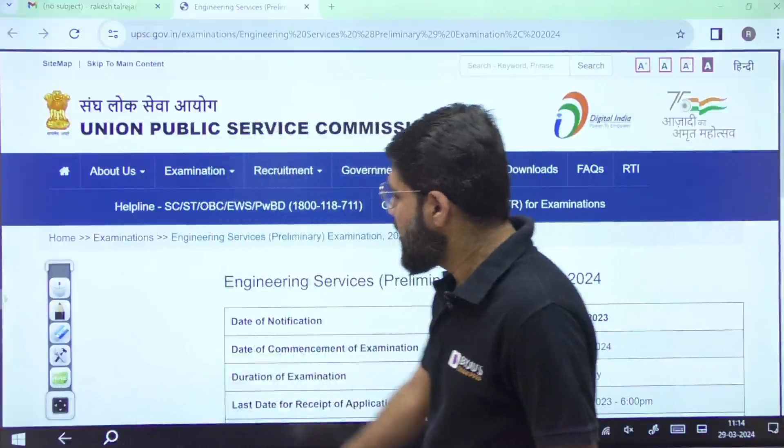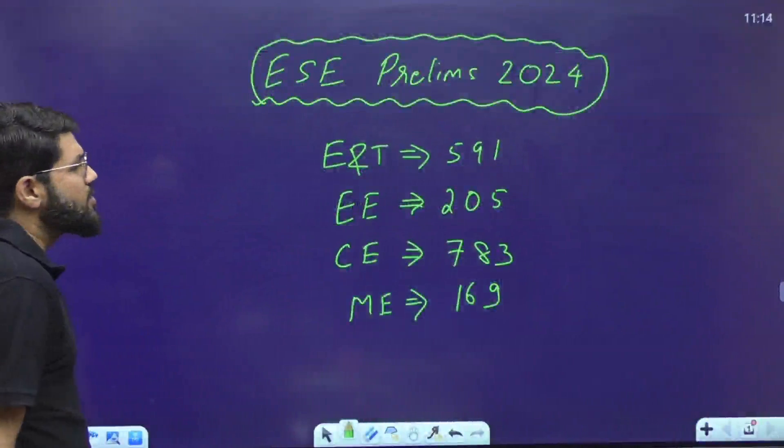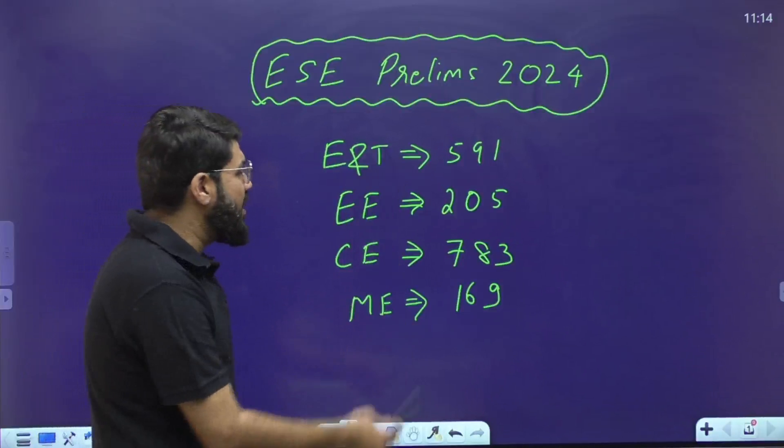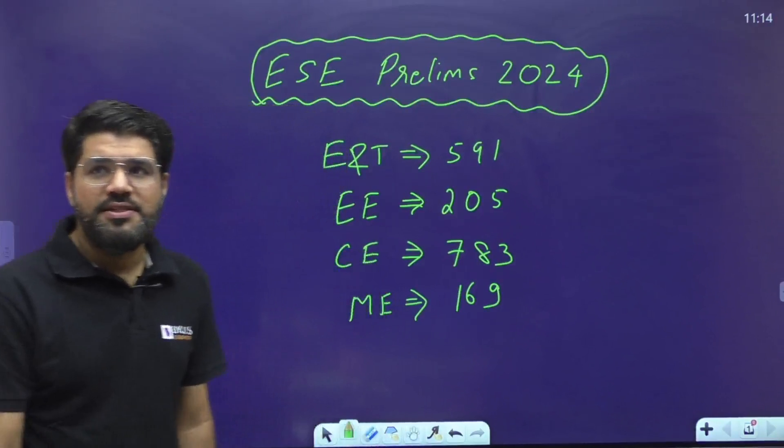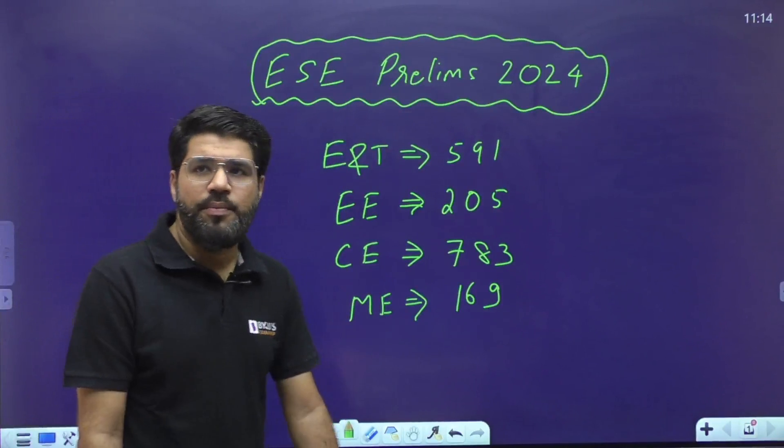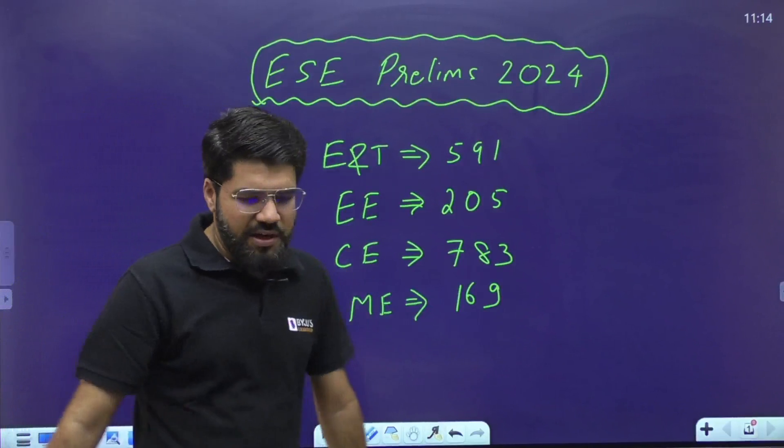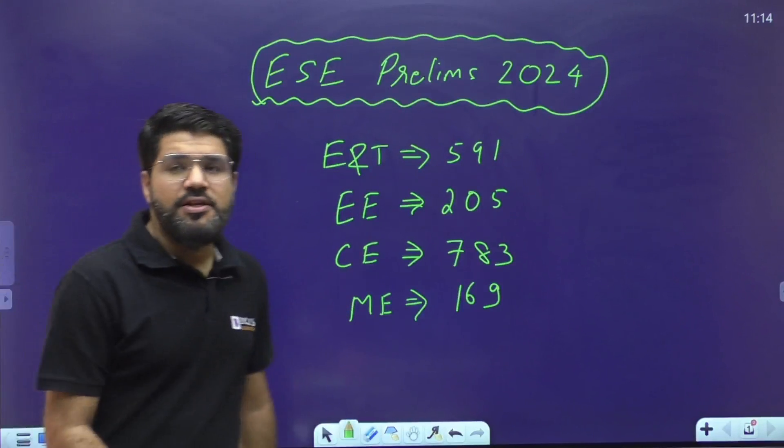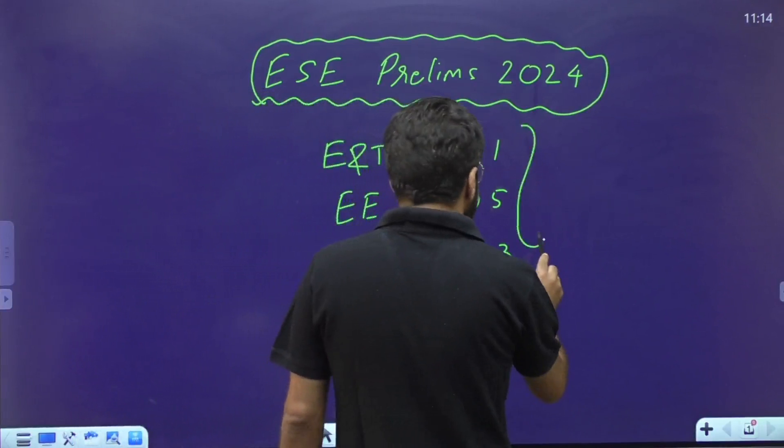In terms of number of students going to the mains examination: from ENT, 591 students; from Civil, 783 students because they had more vacancies this year; Electrical, 205 students; and Mechanical, 169 students. These students will write the mains examination which will be conducted on June 23rd, 2024.